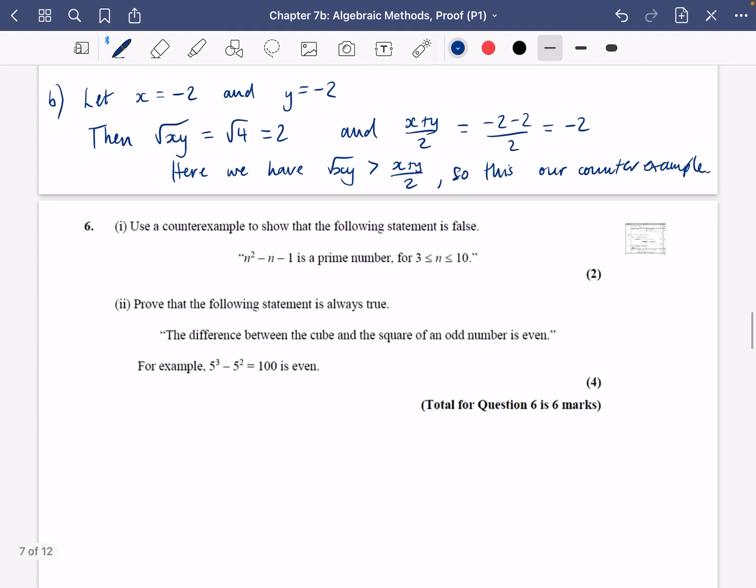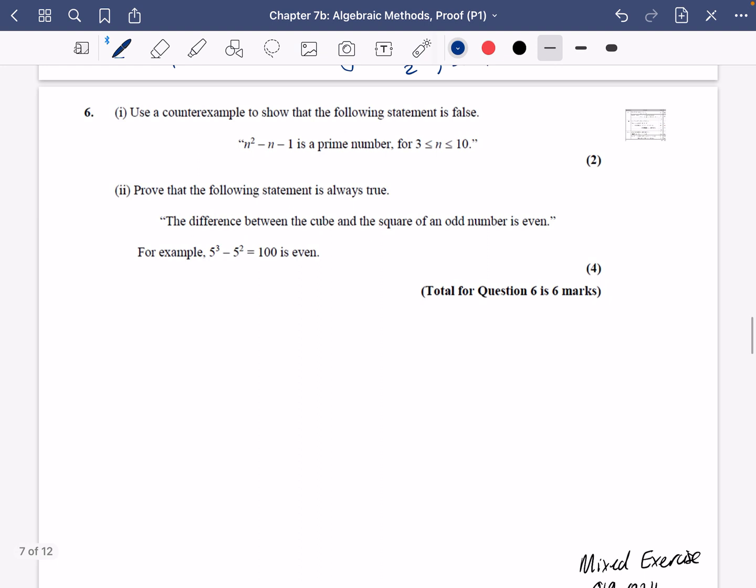OK, last one that we've got here. It's a bit of a mixture. It says use a counterexample to show that the following statement is false. So it says that n² - n - 1 is a prime number for n between three and ten. So I'm going to show you a shortcut that you might find helpful to do on your calculators. I could actually just test out 3, 4, 5, 6, 7, 8, 9, and 10, but instead I'm actually going to get my calculator to do all of that for me.